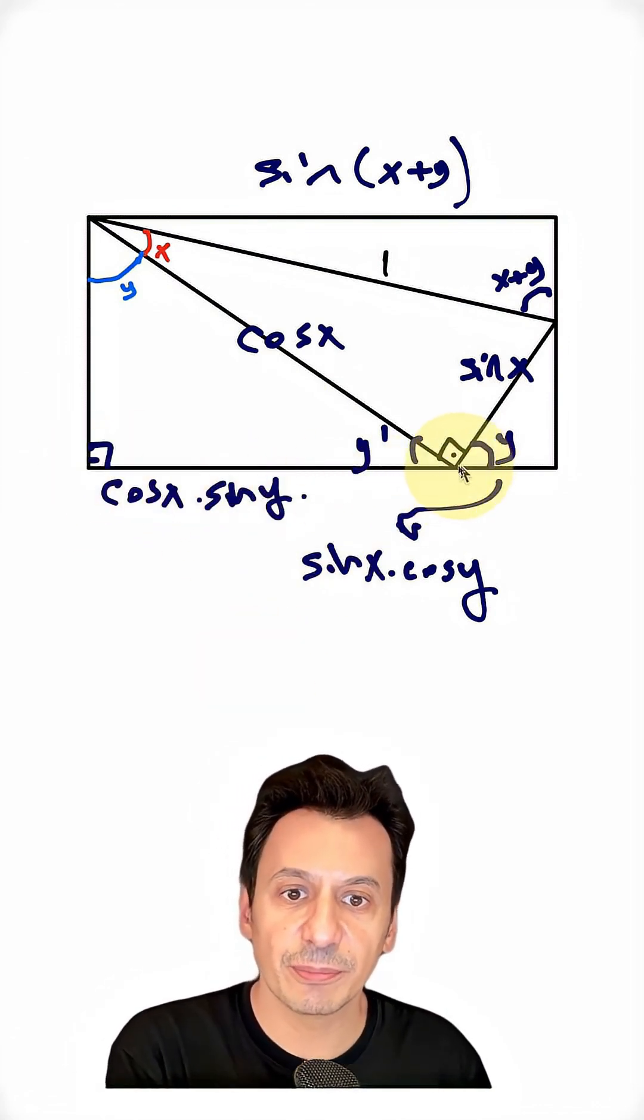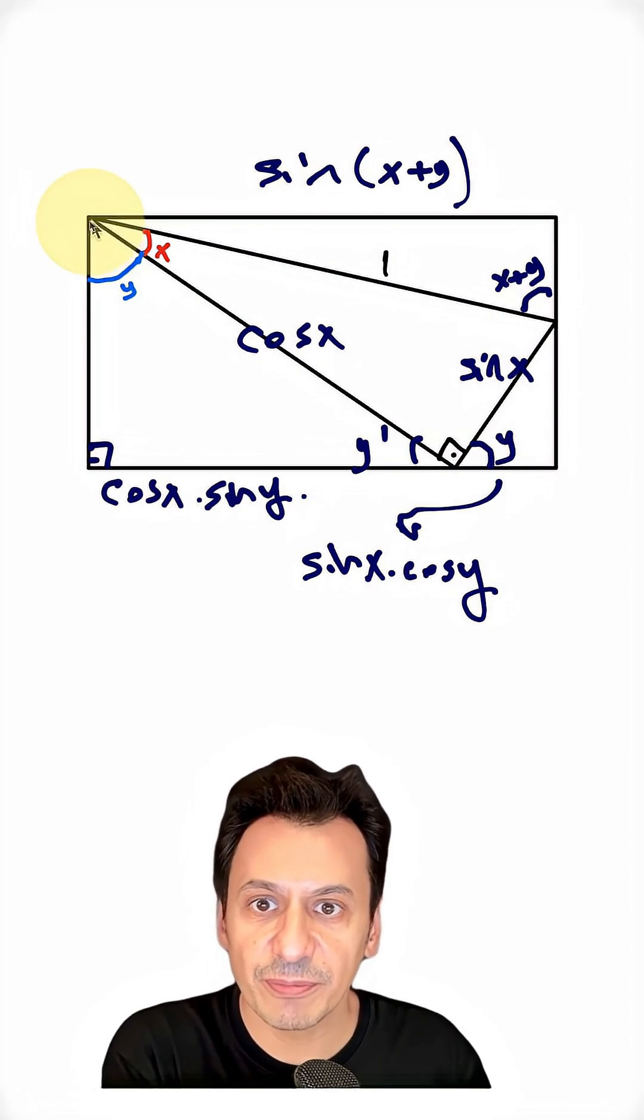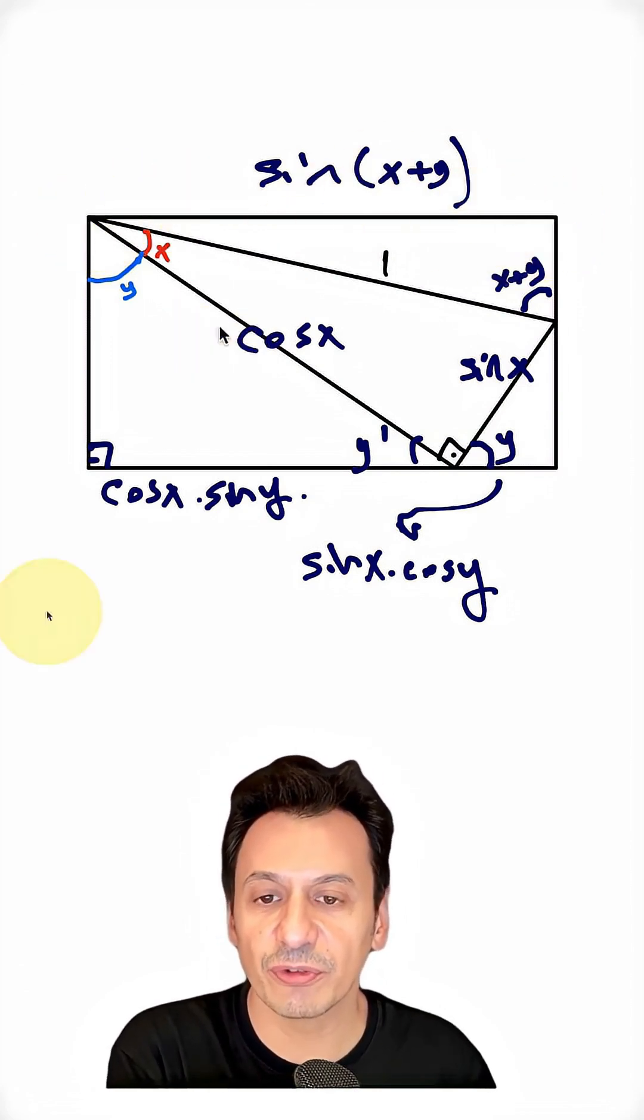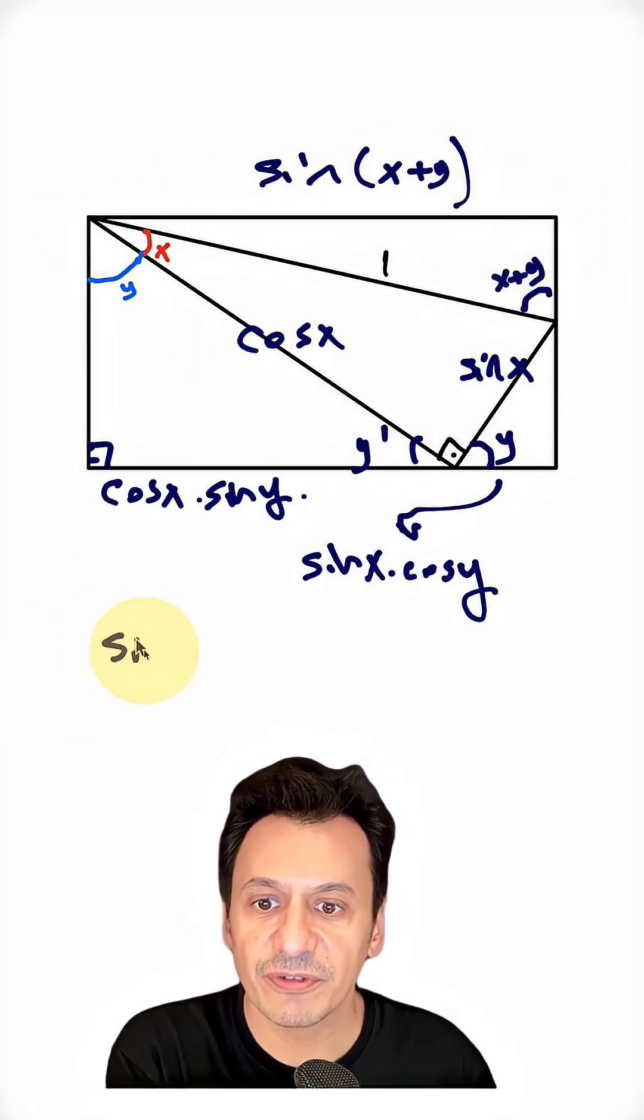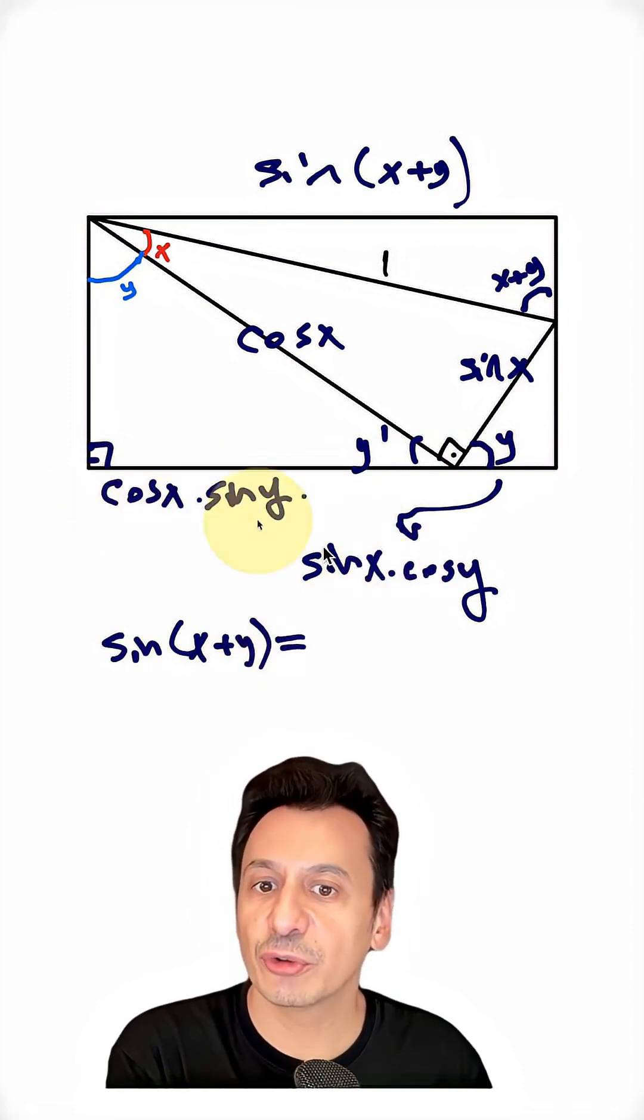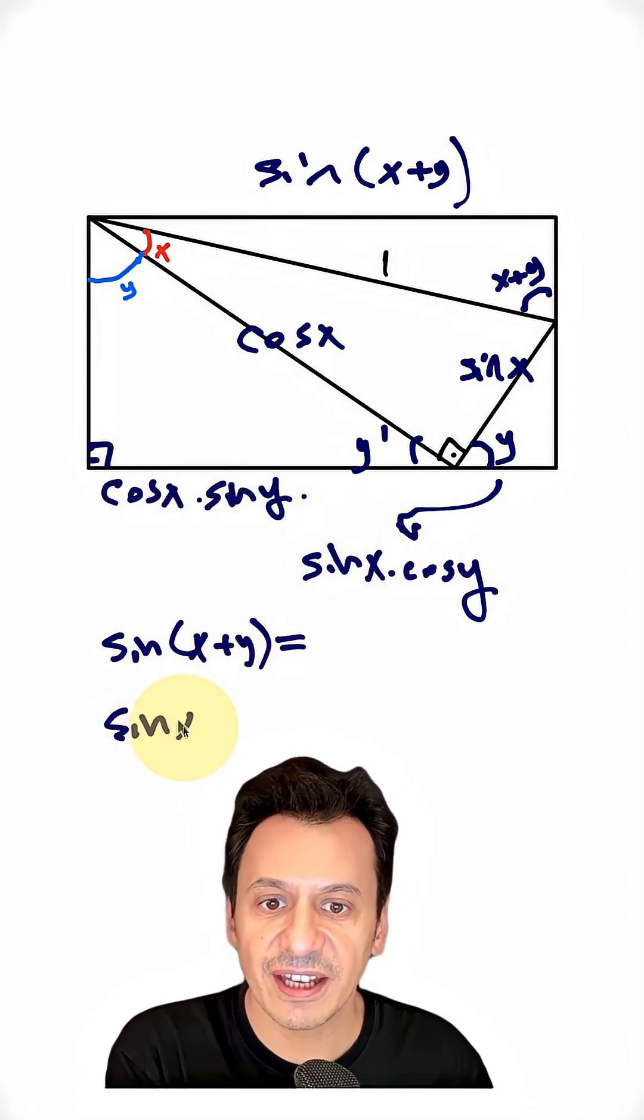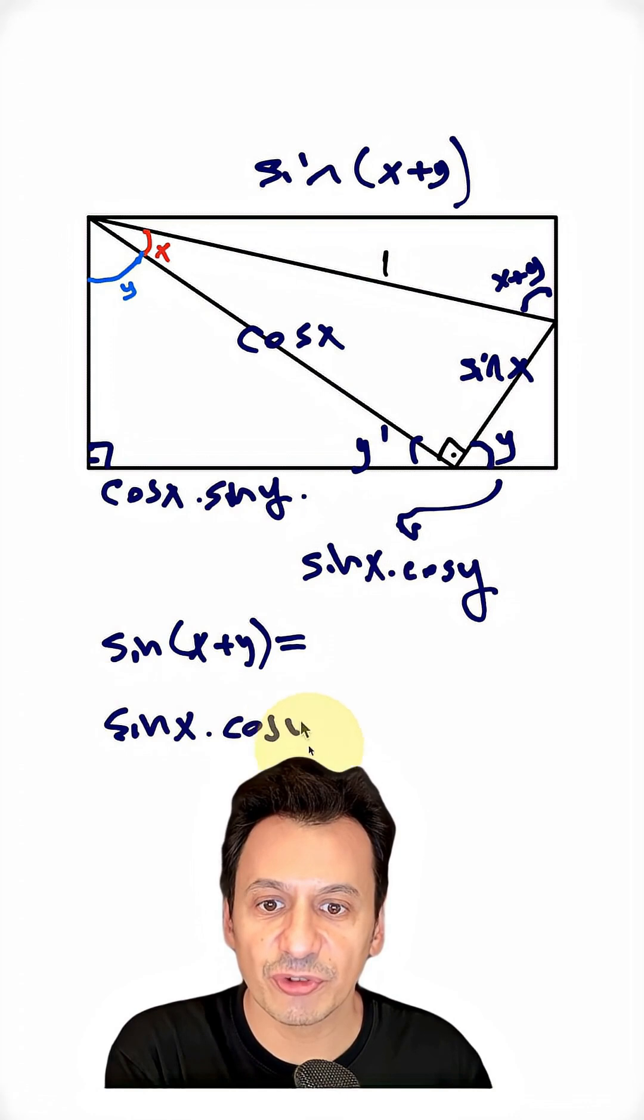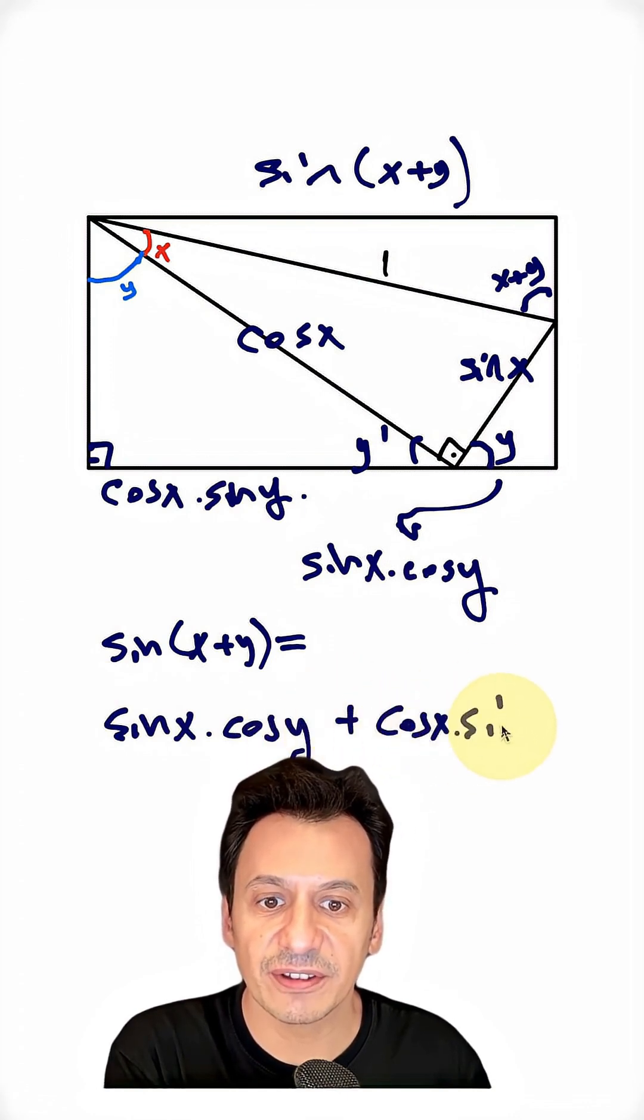Now, the sum of this line segment and this line segment here will give me the long side of the rectangle. So, let's write this equation. Sine of x plus y equals the sum of these two line segments: sine x times cosine y plus cosine x times sine y, which is the function with respect to both x and y.